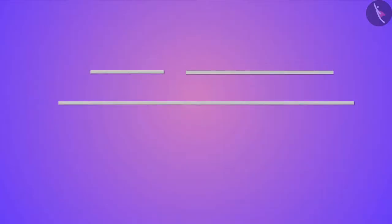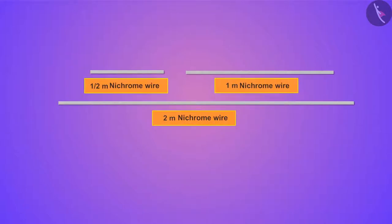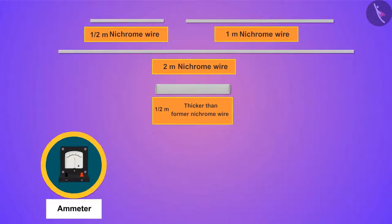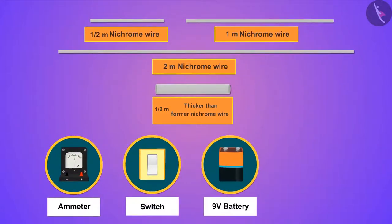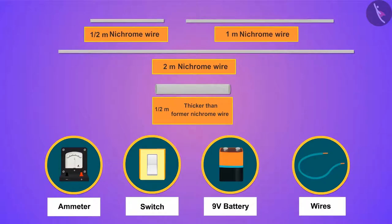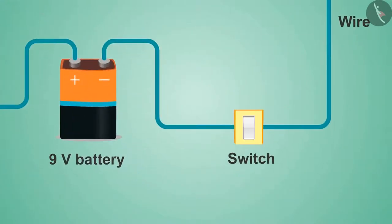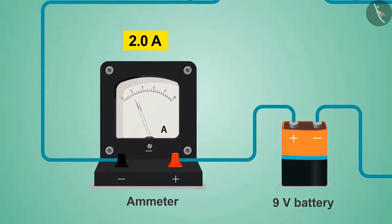To perform this activity we need three pieces of nichrome wire having lengths of half meter, one meter, and two meters. Other wire can be taken if there is no nichrome wire. We also need one piece that is half meter long and thicker than the former nichrome wire, plus an ammeter, a key, a 9-volt battery, and connecting wires. Connect the circuit, and as soon as we close the key with the half-meter wire connected, we get a reading on the ammeter and record it in the table.